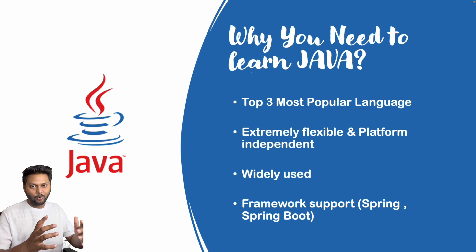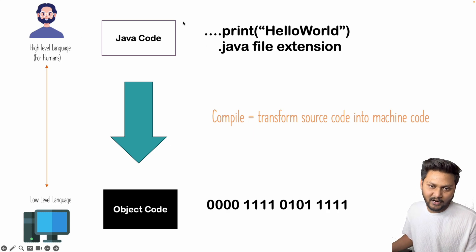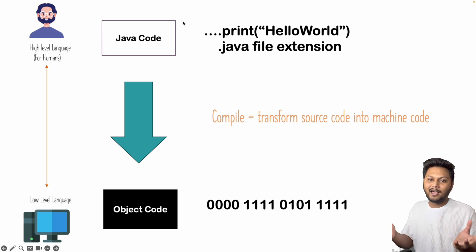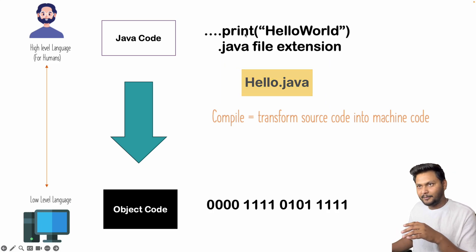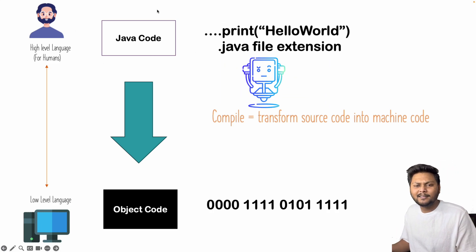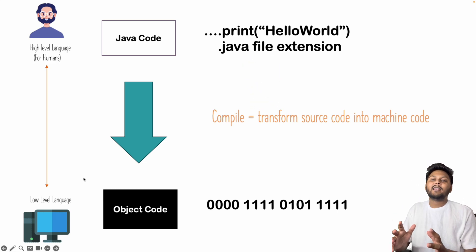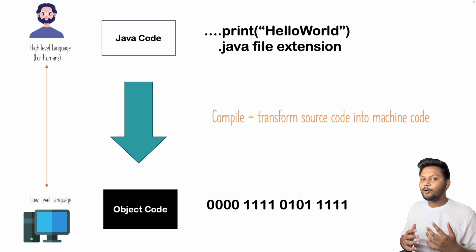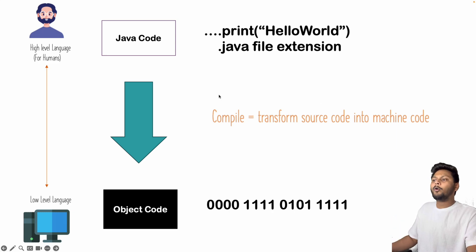Now let's have a look at how Java works under the hood. The Java code that we write is a high-level language — something that a human understands. For example, we write classes, main methods, print statements, and everything, and that has a .java extension. This Java code is not understandable by a machine, so it needs to be converted to a low-level language in order to make it understandable by the machine.